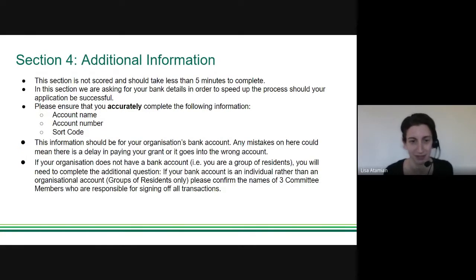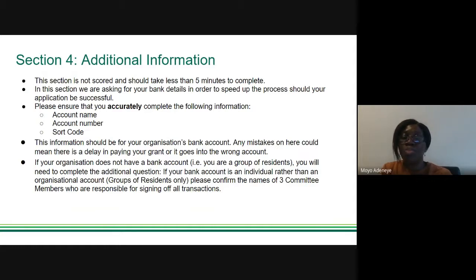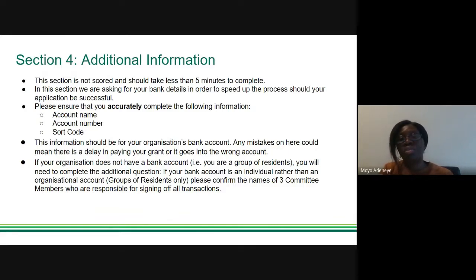Section four is for your organization's bank details to speed up payment if you are awarded funding. Please make sure you complete this accurately as mistakes could cause delays in paying your grant. We have had issues with this in the past. If you are a group of residents without an organizational bank account, you will need to provide an individual bank account and complete additional questions naming three committee members responsible for signing off all financial transactions.